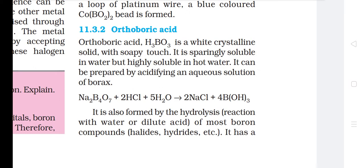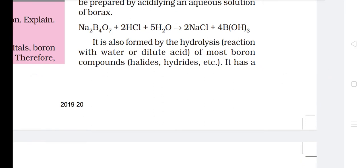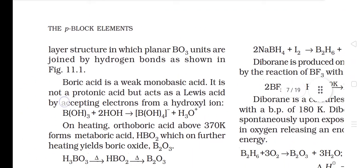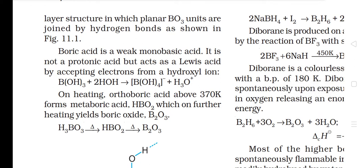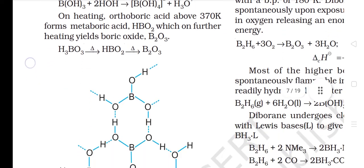11.3.2 Orthoboric Acid: Orthoboric acid H3BO3 is a white crystalline solid with a soapy touch. It is sparingly soluble in water but highly soluble in hot water. It can be prepared by acidifying an aqueous solution of borax: Na2B4O7 + 2HCl + 5H2O → 2NaCl + 4H3BO3. It is also formed by the hydrolysis of most boron compounds such as halides and hydrides. It has a layer structure in which planar BO3 units are joined by hydrogen bonds. Boric acid is a weak monobasic acid — it does not act as a protonic acid but acts as a Lewis acid by accepting electrons from a hydroxyl ion. On heating orthoboric acid above 370 K, it forms metaboric acid HBO2, which on further heating yields boric oxide B2O3.